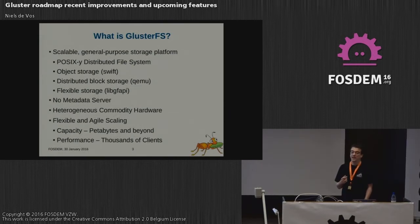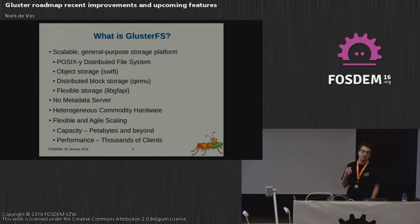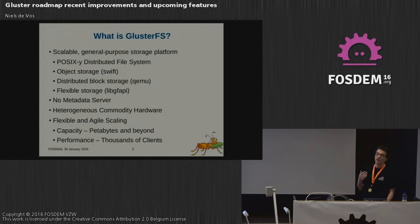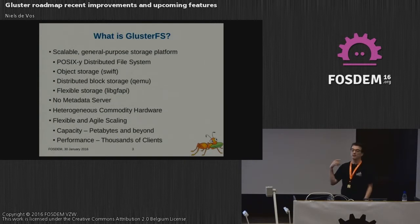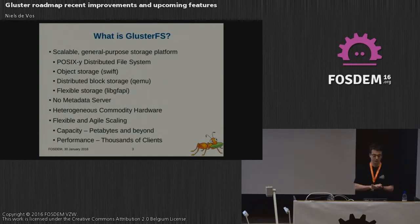We also have a library where you can use your own applications to speak native Gluster protocols. This library is called libGFAPI. One of the examples is that QEMU uses libGFAPI, and you can pass a specific Gluster URL to QEMU — something like gluster://servername/volumename/file. And Gluster knows how to interpret this URL and how to use it natively without going through a FUSE endpoint or NFS endpoint.